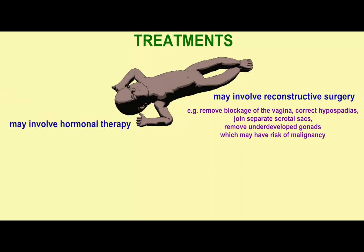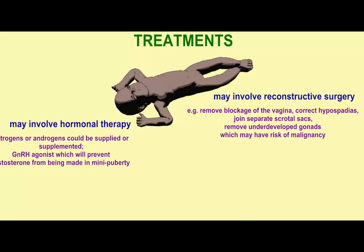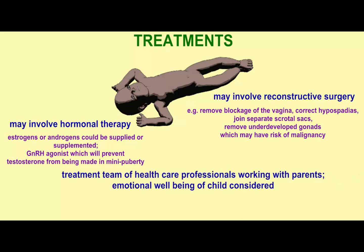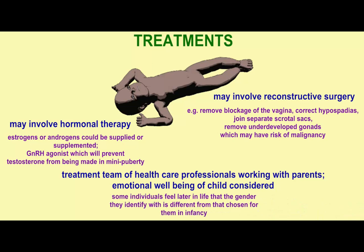Treatments could involve hormonal therapy, such as supplying estrogens in the case of individuals who would develop as female, or androgens in individuals who will develop as males. GnRH agonists would prevent testosterone from being made in mini-puberty, which might cause an individual developing as a female to have more male features.